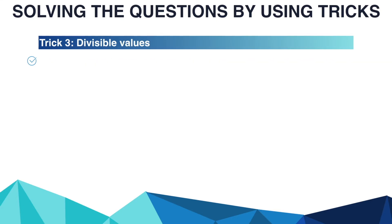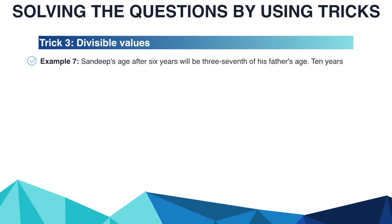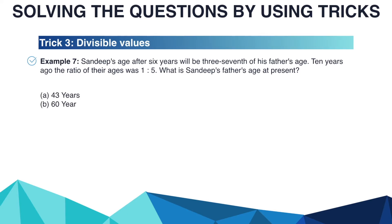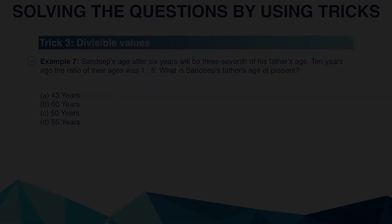Let's take another example. Sandeep's age after 6 years will be 3/7 of his father's age. 10 years ago, the ratio of their ages was 1 to 5. What is Sandeep's father's present age? Options are A: 43 years, B: 60 years, C: 50 years, D: 56 years. Please try to solve this problem and write your answer in the comment box.